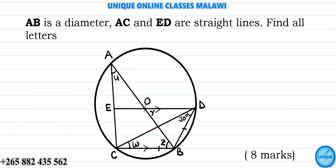AC and ED are straight lines. They are talking about this line here and that line. Now, we should find all letters. We should find W, Y, and Z.